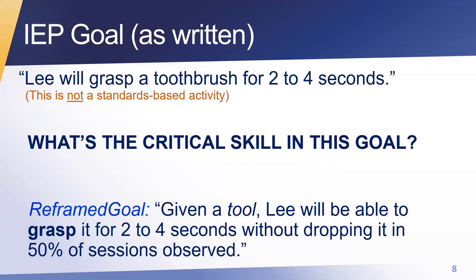So what's the critical skill in toothbrushing? My students made more progress when I started focusing on the critical skill necessary to brush teeth, which is grasping. When I reframed this goal to consider the grasping aspect, I found ways to practice the skill across contents and across all day long. I incorporated grasping into the curriculum. I reframed the goal to say: given a tool, the student will grasp it for two to four seconds without dropping it in about half of the sessions observed.